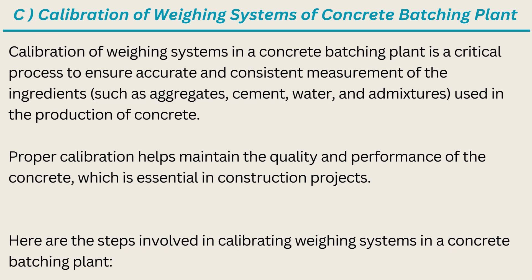C. Calibration of Weighing Systems of Concrete Batching Plant. Calibration of weighing systems in a concrete batching plant is a critical process to ensure accurate and consistent measurement of the ingredients — such as aggregates, cement, water, and admixtures — used in the production of concrete. Proper calibration helps maintain the quality and performance of the concrete, which is essential in construction projects. Here are the steps involved in calibrating weighing systems in a concrete batching plant.